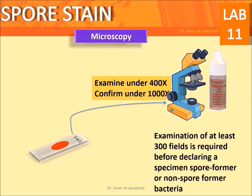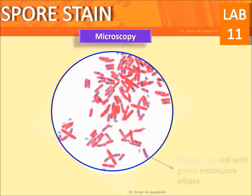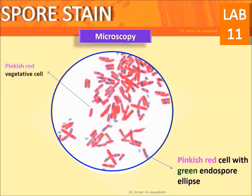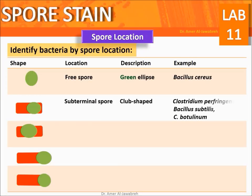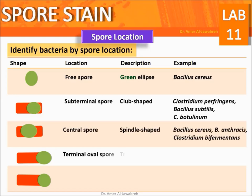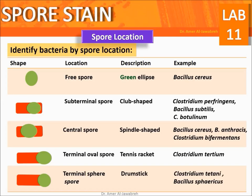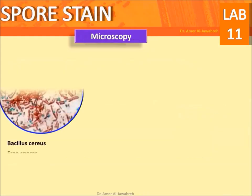Results: A pinkish-red cell with a green endospore (ellipse shape) indicates a spore-forming vegetative cell with endospore. A pinkish-red vegetative cell alone indicates a non-spore-former. A green ellipse represents a free spore. Identify bacteria by spore location as shown in the table.